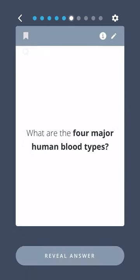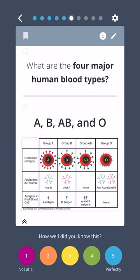What are the four major human blood types? A, B, AB, and O.